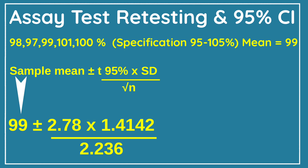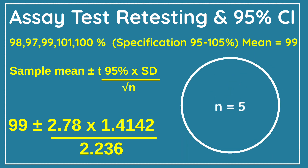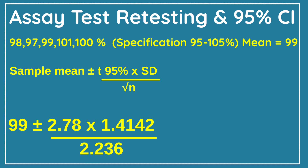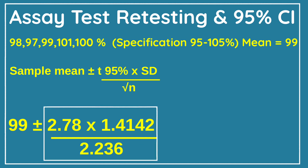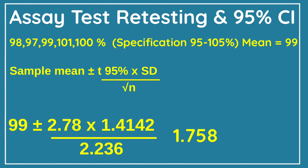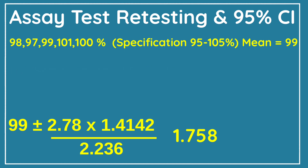Here, mean = 99, and T95% for five preparations = 2.78. Standard deviation = 1.4142, which you can calculate using Excel or Google. n = 5, and √5 = 2.236. After solving this portion of the calculation, you will get the value 1.758.